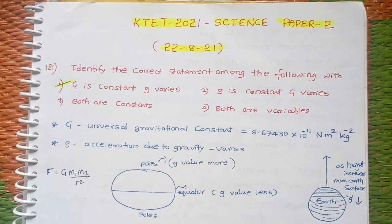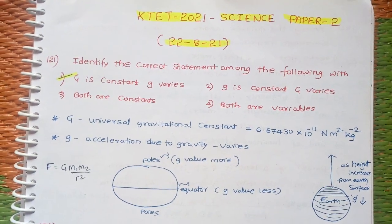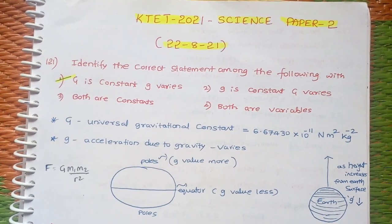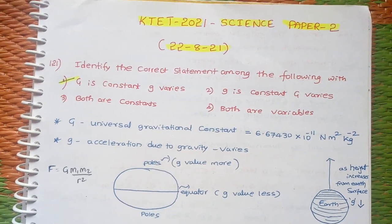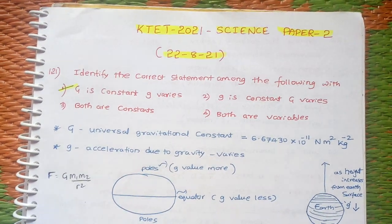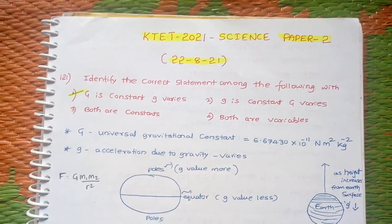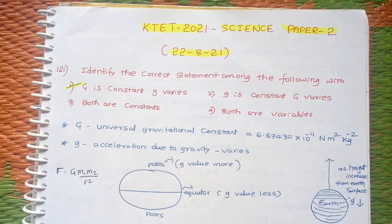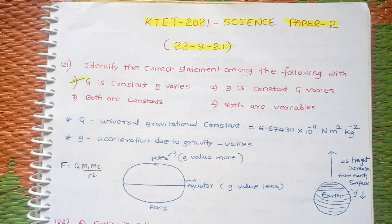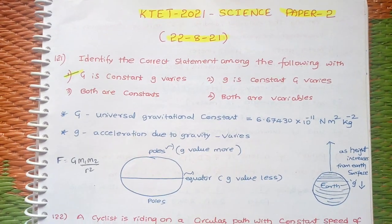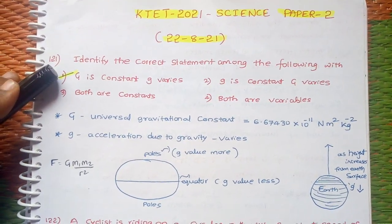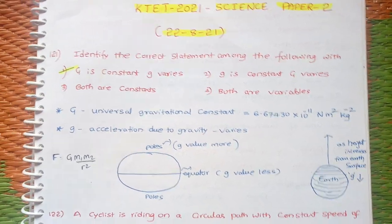From Earth's surface if you go down inside the Earth's crust, the g value decreases. From Earth's surface if you move away to higher levels, g value also decreases. Like this, g value varies. So option 1 is correct: capital G is constant, small g varies.